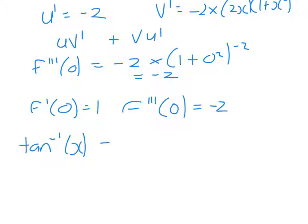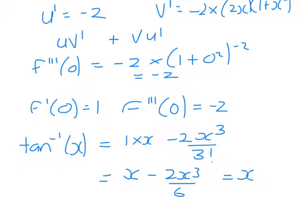So that tells us that our expansion of tan^(-1)(x) is 1 times x minus 2x³ over 3 factorial. So that is x minus 2x³ over 6, which is x minus x³ over 3.